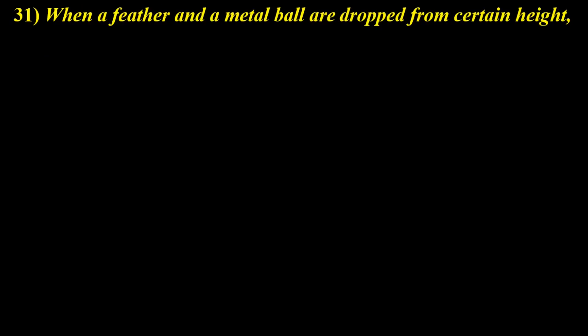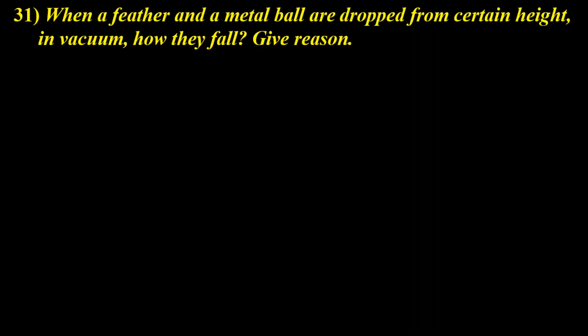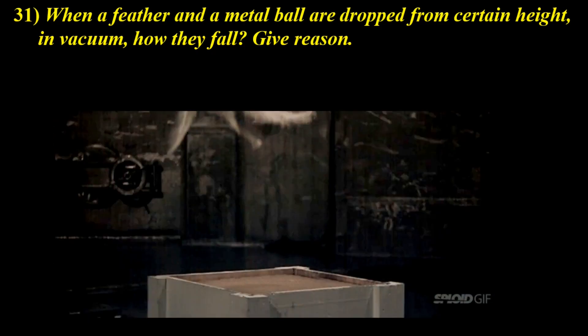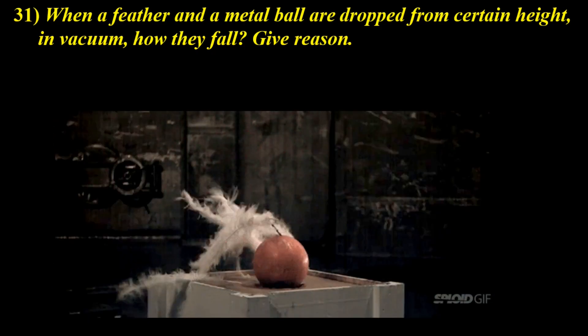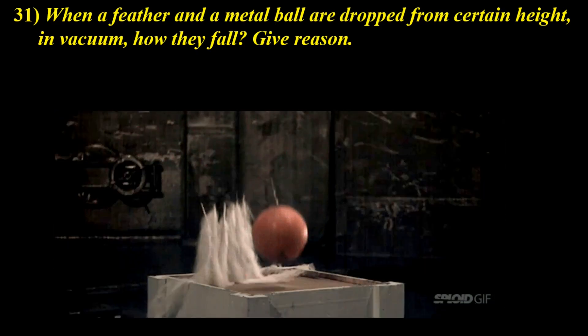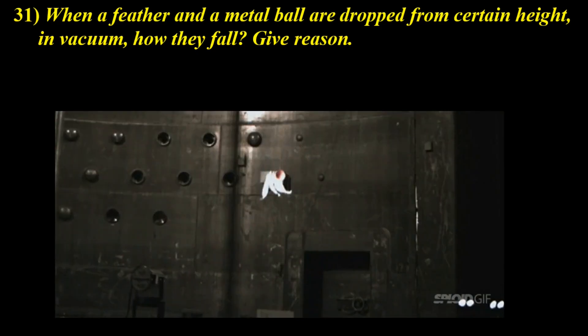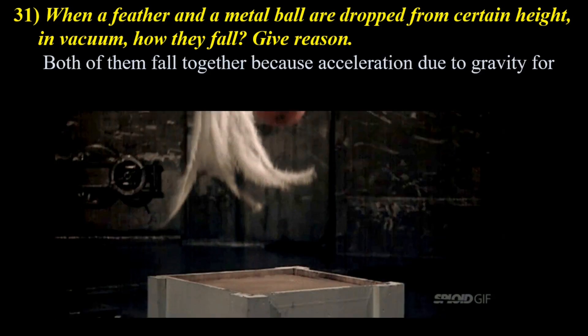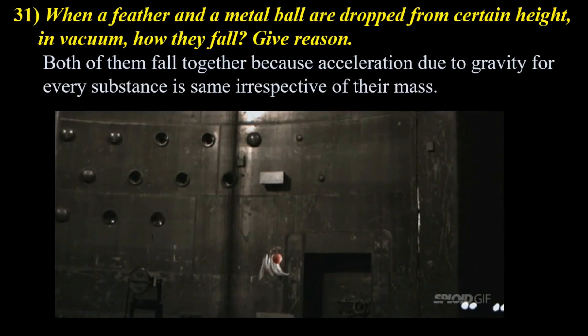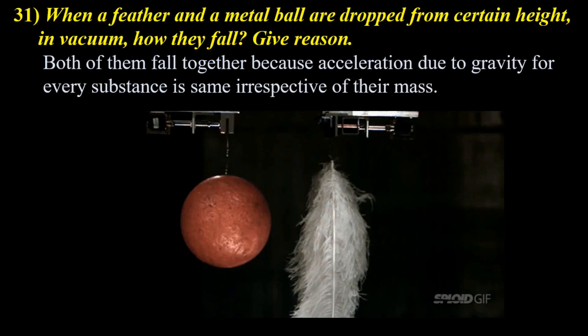When a feather and a metal ball are dropped from a certain height in vacuum, both of them fall together. In vacuum, both of them fall together because acceleration due to gravity for every substance is the same, irrespective of their mass.